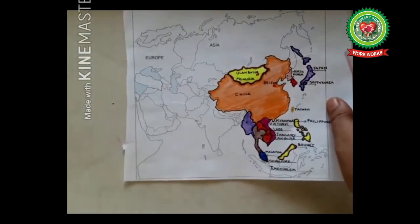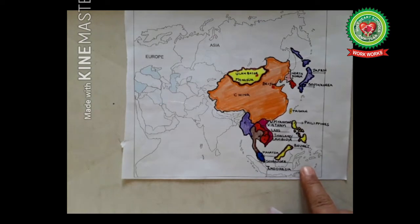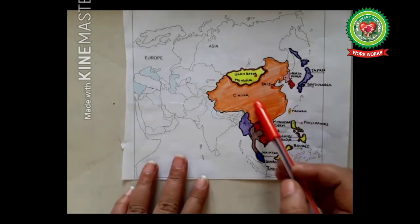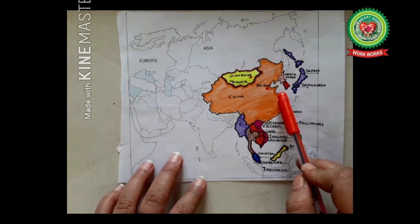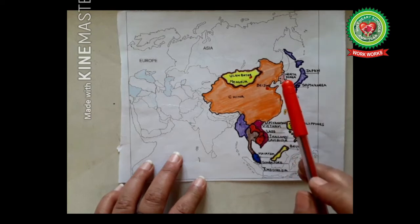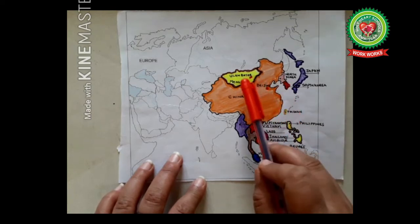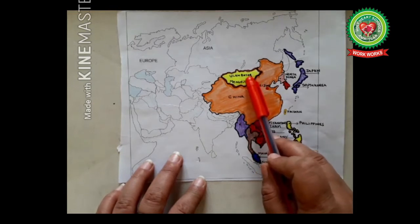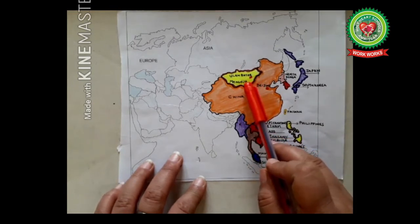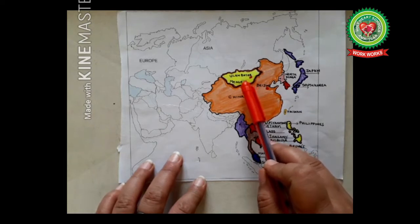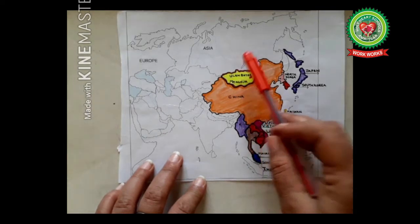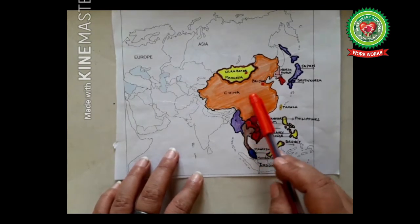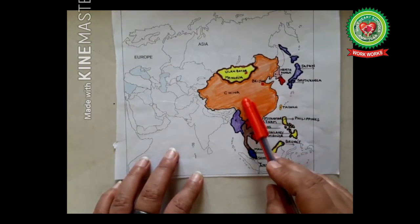This is the political map of Asia. Let's start with East Asia countries. East Asia is the eastern sub-region of Asia, defined in both geographical and ethno-cultural terms. The region consists of six main countries. Number one: Mongolia. Mongolia is a landlocked country in East Asia, sandwiched between China to the south and Russia to the north.